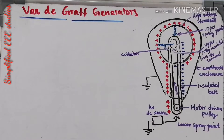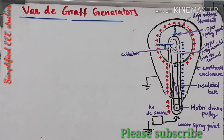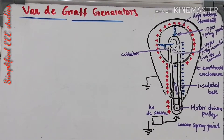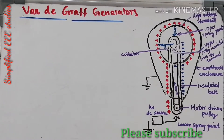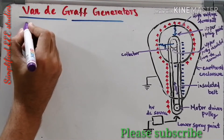Hi everyone, welcome back to my YouTube channel. In the last section I explained how to produce high voltage DC by using a high voltage rectifier — that is one method. Today we will be explaining the second method, which is known as the Van de Graaff generator. Let us have a brief introduction.